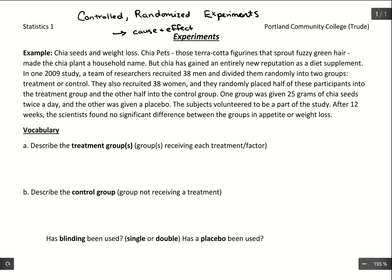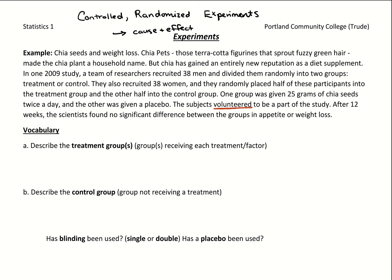The subjects volunteered to be part of the study. This is important to note since that could introduce some voluntary bias. However, when running experiments you have to have volunteers — you can't force people to participate. So we'll note that there might be some voluntary bias, but we can move forward trusting our data since they're controlling so many other factors. After 12 weeks, the scientists found no significant difference between the groups in appetite or weight loss.